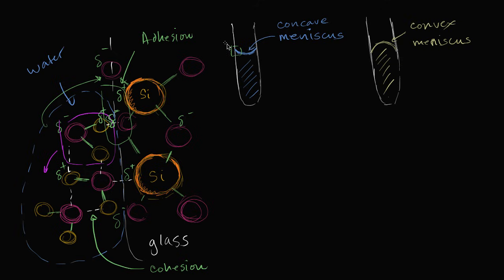So that's why we observe a meniscus like this. And there are even more fascinating properties of adhesion. Just to be clear about what's going on with mercury: the mercury is more attracted to itself than it is to the glass container, so it bulges right over there.